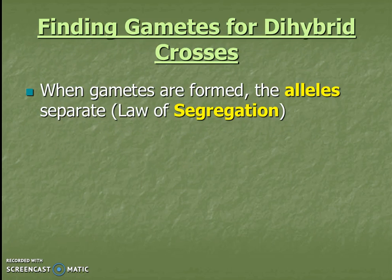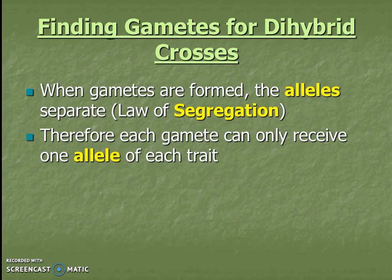Now let's talk about how to find the gametes for a dihybrid cross. When gametes are formed, the alleles separate — the law of segregation — therefore each gamete can only receive one allele for each trait. Remember: gametes are haploid, not diploid.